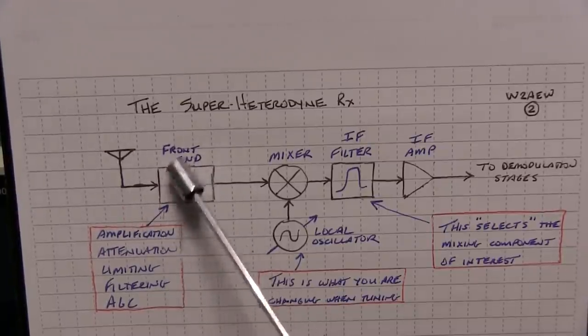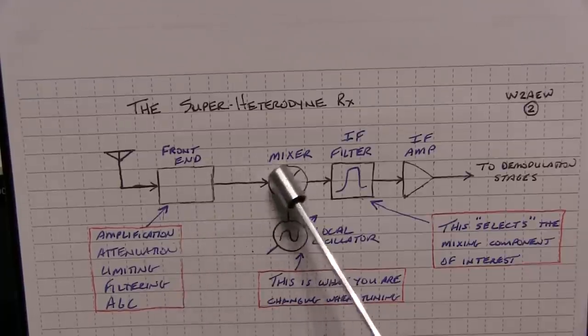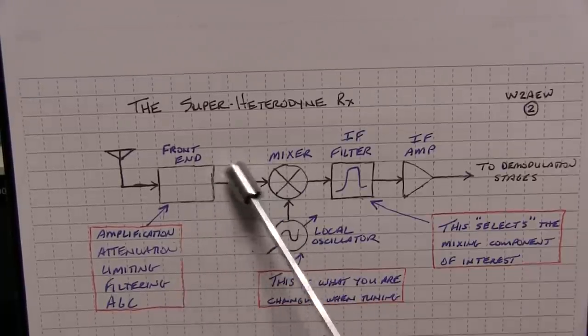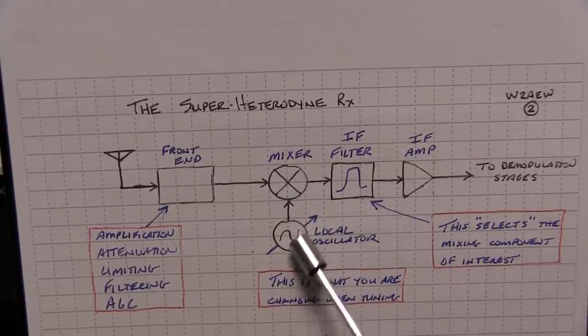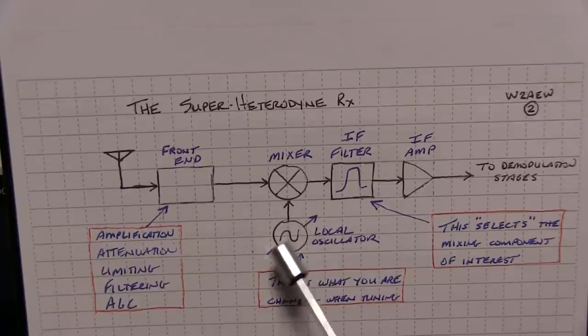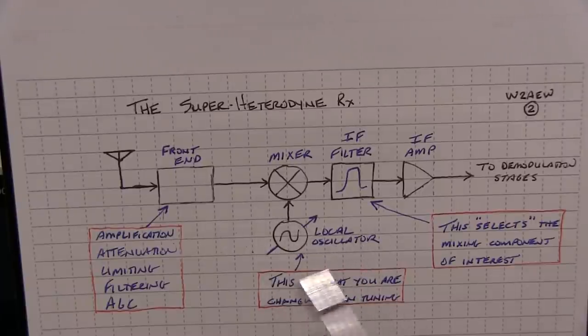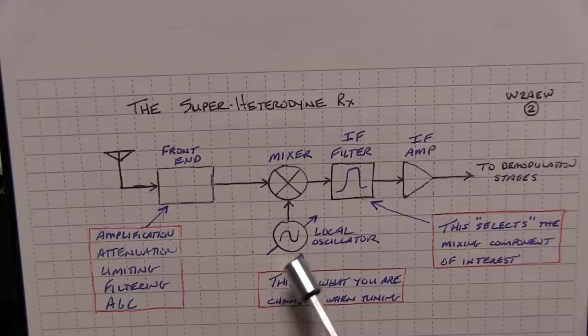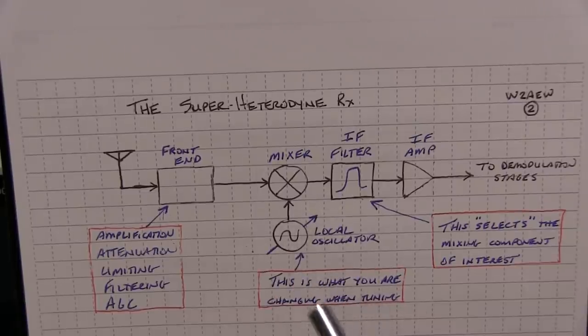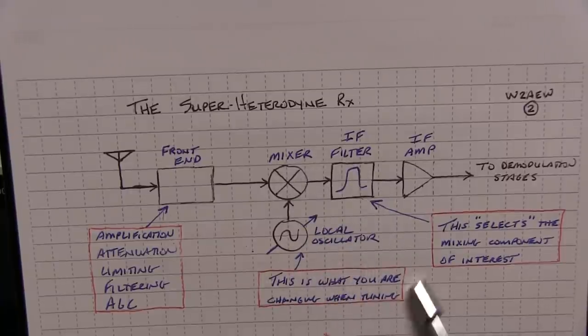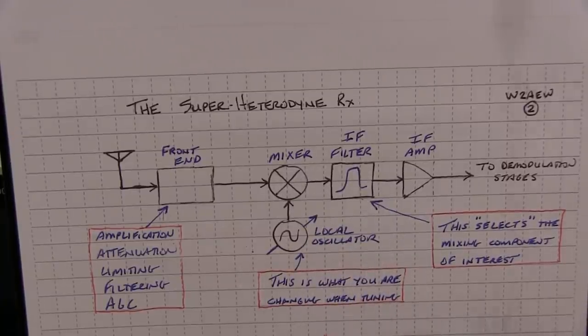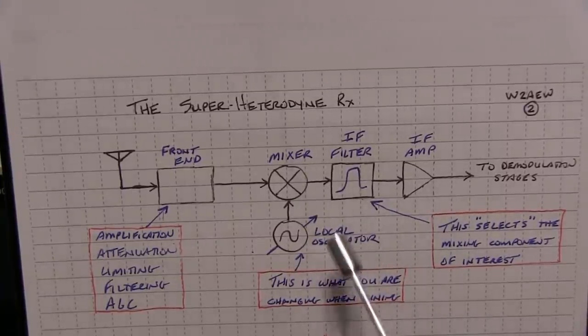So the RF signal after being processed from the front end is presented as FIN, or a whole range of frequencies, input into the mixer. Mixer is also fed with a local oscillator. Now when you're tuning a radio up or down, when you're tuning the VFO, or the main tuning knob, what you're really tuning is the frequency of this local oscillator, because that's going to change essentially what the mixing products are that are coming out. So this is what you're changing when you're adjusting the tuning settings on your radio.